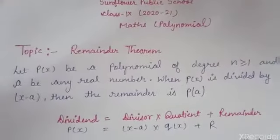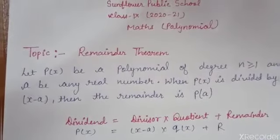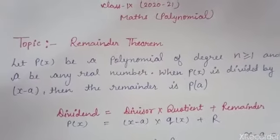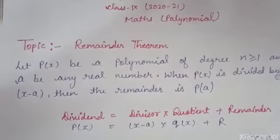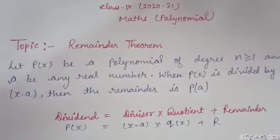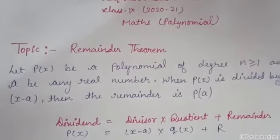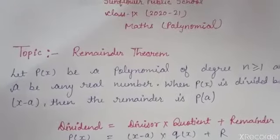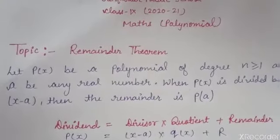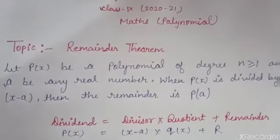Today, we discuss the remainder theorem of chapter 2, Polynomial. The concept of this theorem is that to find the remainder without using the long division method. With the help of this theorem, you can easily find the remainder without performing any long division method within 2 or 3 steps.